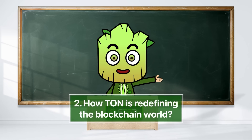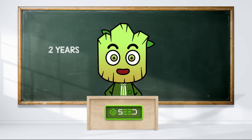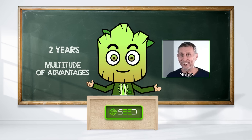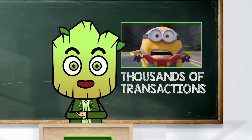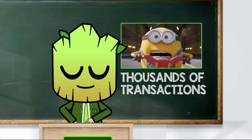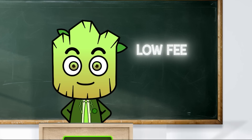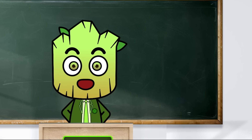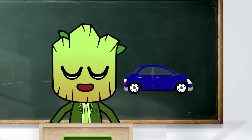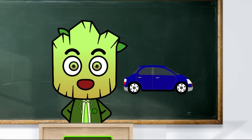How is TON redefining the blockchain world? Well, it's speedy. Only after two years since its launch, TON has offered a multitude of advantages that set it apart from other blockchains. TON can process thousands of transactions faster than you can say crypto. Plus, it won't drain your wallet — fees are super low. And it's eco-friendly, with no power-hogging computers. It's like the hybrid car of blockchains: fast, affordable, and doesn't destroy the planet.